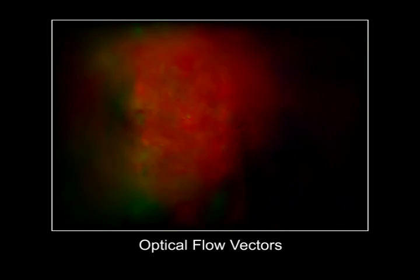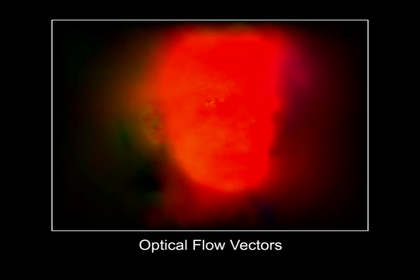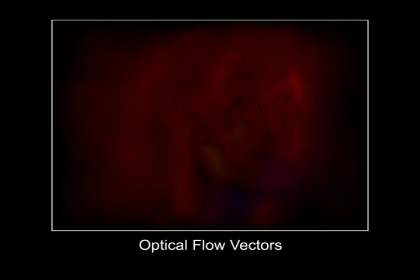Since our subject moves during the basis capture, we need to align the frames using image warping. Failing to do this can produce image smearing, as seen in this non-motion-compensated video. We detect and compensate for this motion using optical flow.